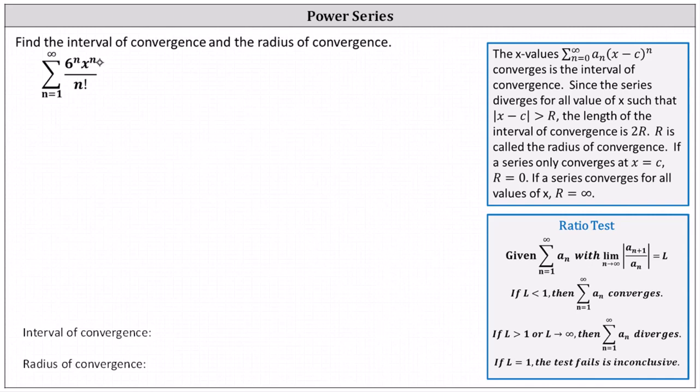Because we have x to the power of n, which we can think of as the nth power of x minus 0, the power series is centered at x equals 0. Referring to our notes on the right, this indicates c equals 0.